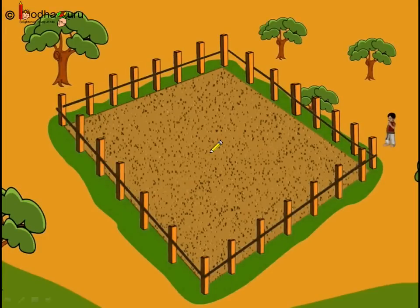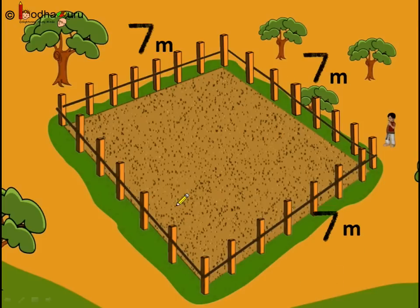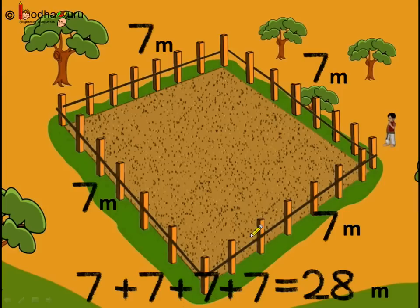Now let's see what would be the perimeter here. This side 7 meters, this side 7 meters, this side 7 meters, and this side 7 meters. If each wire is of length equal to 1 meter and each side has used 7 pieces of wire, so the perimeter here would be equal to 28 meters. Check the unit here — since each wire was of length 1 meter, the unit of perimeter will also be meter.